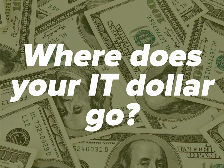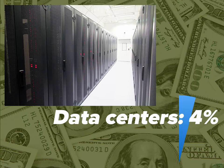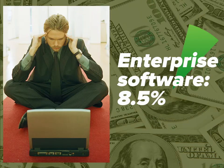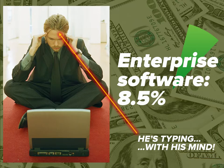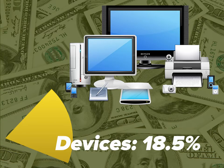Based on averages derived from total global IT spending, about 4% goes to covering the costs of data centers, which are essentially air-conditioned farms for hard drives. 8.5% of your IT buck goes towards enterprise software — and I can assure you with near total certainty, it's never used in the way it's depicted in business stock photos like this one. I mean, just look at the guy — he looks like he's typing with his mind. Devices, and that means all hardware, account for about 18.5%, and they're the third biggest slice of the IT budget pie.